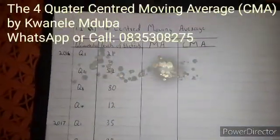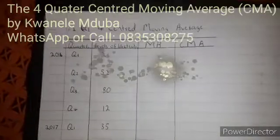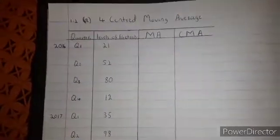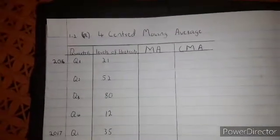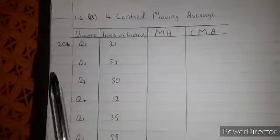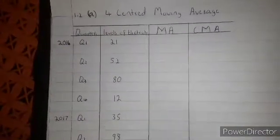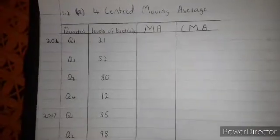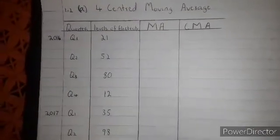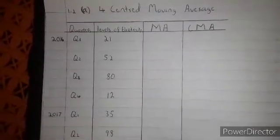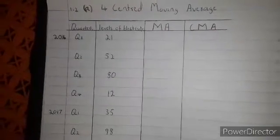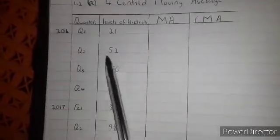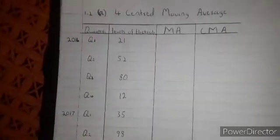Hi guys, it's Gwanele. Today I'll show you how to do the four-point standard moving average. Firstly, you must have a moving average column. We do the four-point standard moving average because we have four quarters, which is the period. We must calculate the moving average and put it in the middle of the quarters — it must be the median value.